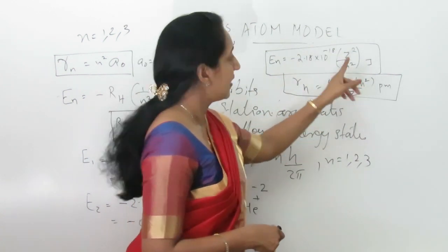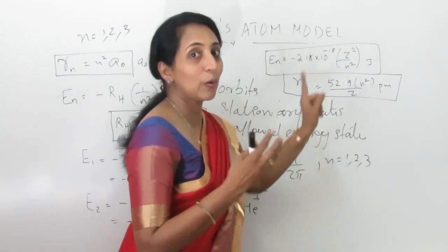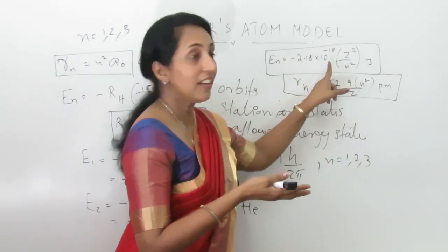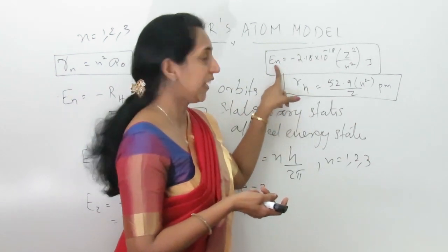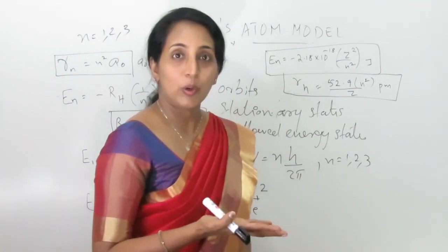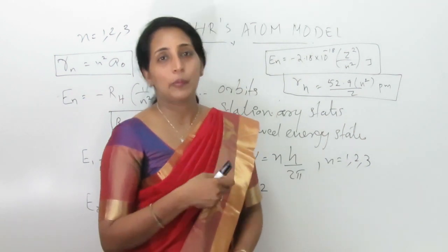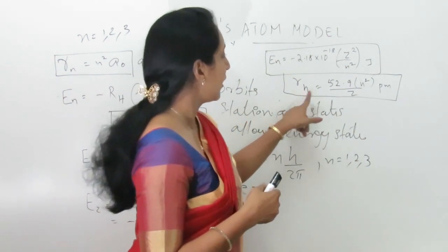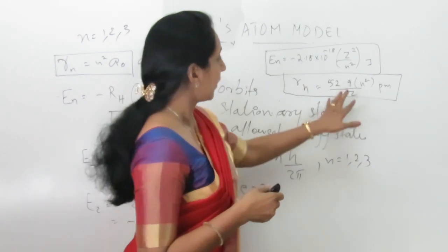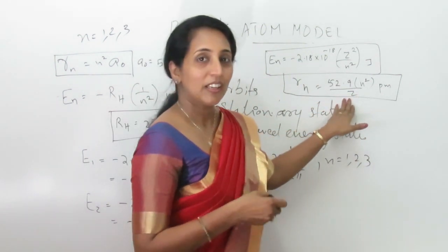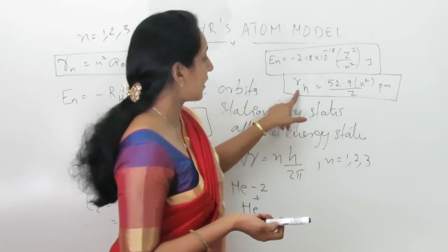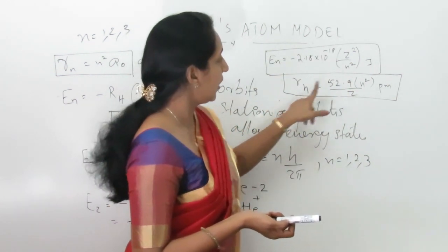For these one-electron ions, the energy equation is En = −RH × Z²/n², where Z is the atomic number. We substitute the atomic number of the ion and the orbit number to calculate the energy of different orbits. The radius equation for these ions is Rn = 52.9 × n²/Z picometers, where Z is the atomic number. We substitute the atomic number and the orbit number to find the radius.